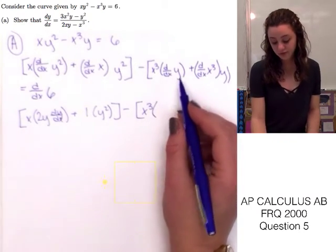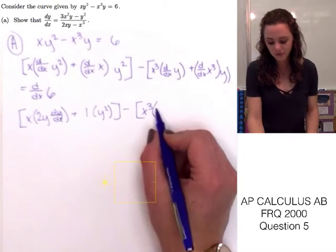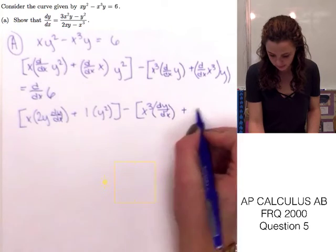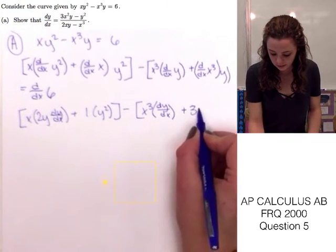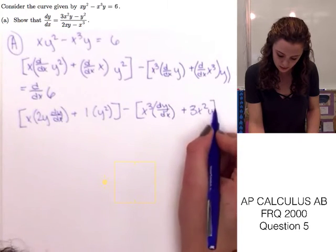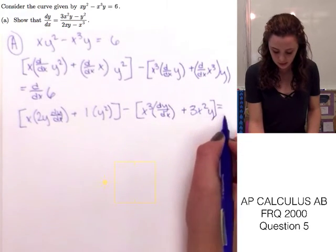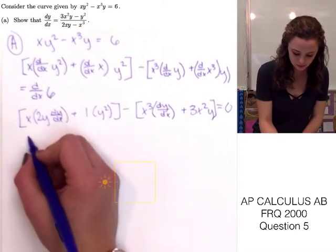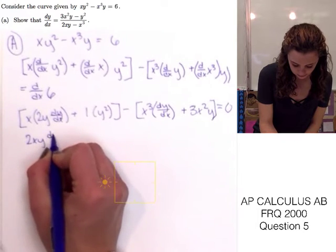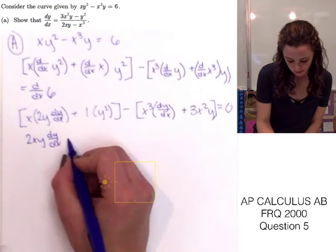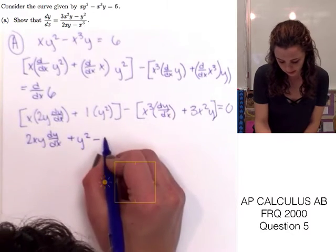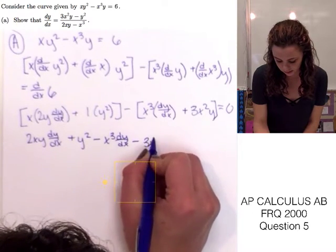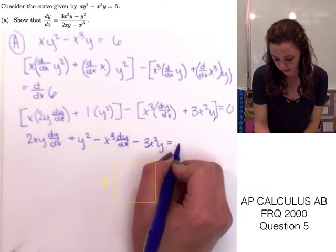Then for the second term: x³ times the derivative of y, which gives us dy/dx, plus the derivative of x³ which is 3x² times y. That all equals 0 since the derivative of a constant is always 0. Simplifying gives us 2xy dy/dx plus y² minus x³ dy/dx minus 3x²y, all equal to 0.